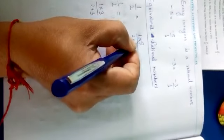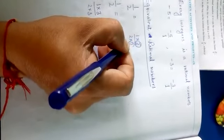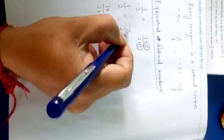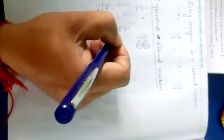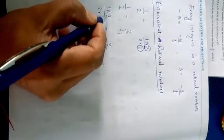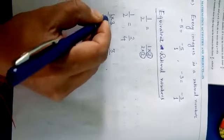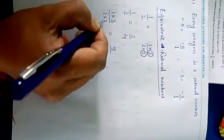It becomes 1 into 2 equals 2 and 2 into 2 equals 4. If you multiply 1 by 3 and 2 by 3, it becomes 1 into 3 equals 3 and 2 into 3 equals 6.